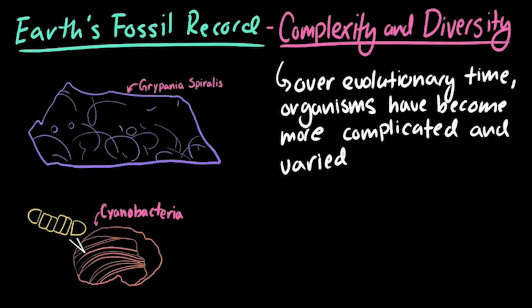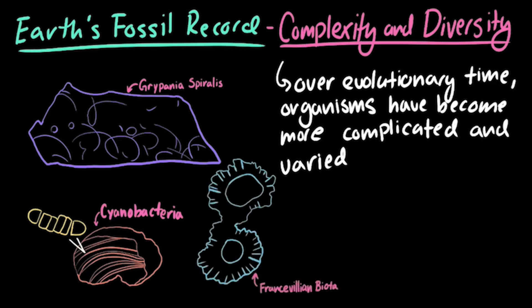The fossil record then goes on to document major leaps in complexity of life on Earth, with, for example, the large tube-shaped cells of Grypania spiralis, and the macroscopic organisms in the Francvillian biota.